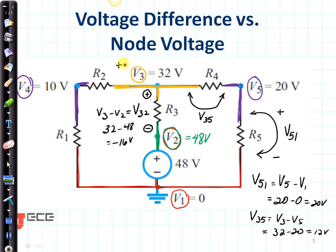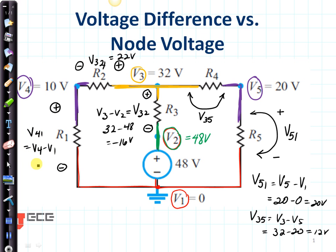Let's look at the voltage right here, plus to minus. V3 is the plus sign and V4 is the minus sign, so that's going to be V3 minus V4, which is going to be 22 volts. Then V4 is the plus and V1 is the minus, so it's V4,1, which is V4 minus V1, or 10 volts. What we've just done is calculated all of the node voltages as well as all of the voltage differences. The node voltages are the ones with a single number — V1, V2, V3, V4, and V5 — while the difference voltages are the ones with two numbers, like V5,1, V5,3, V3,2, V3,4, and V4,1.